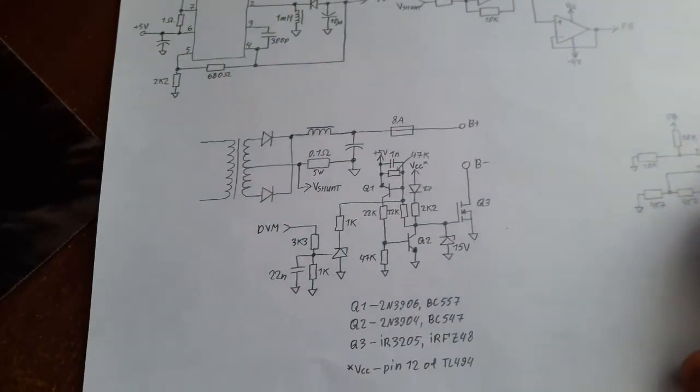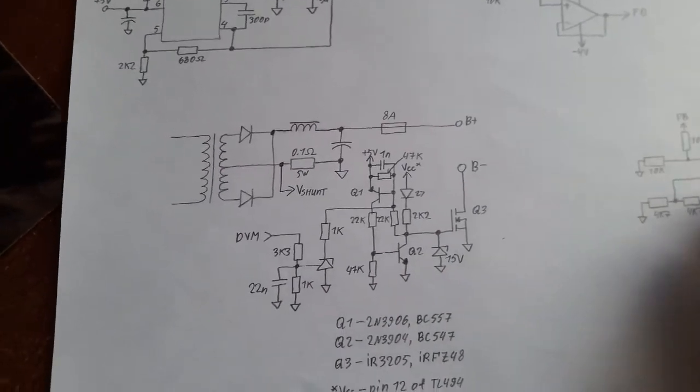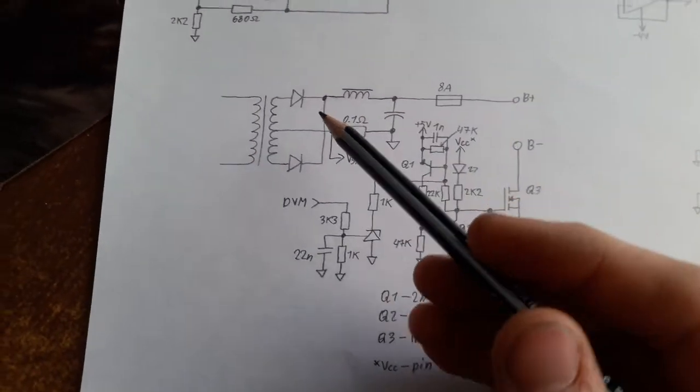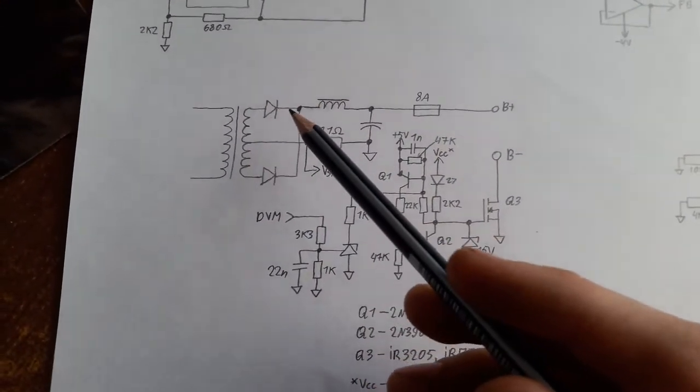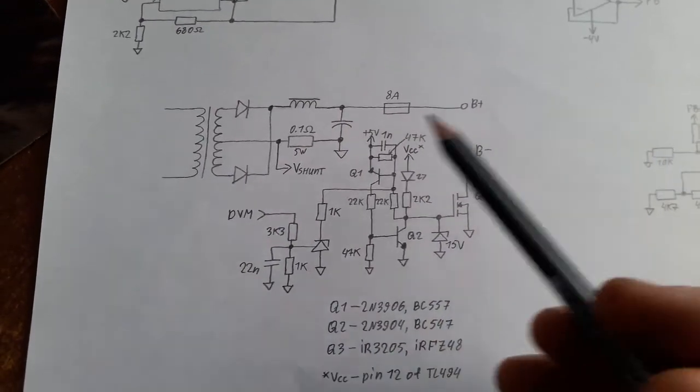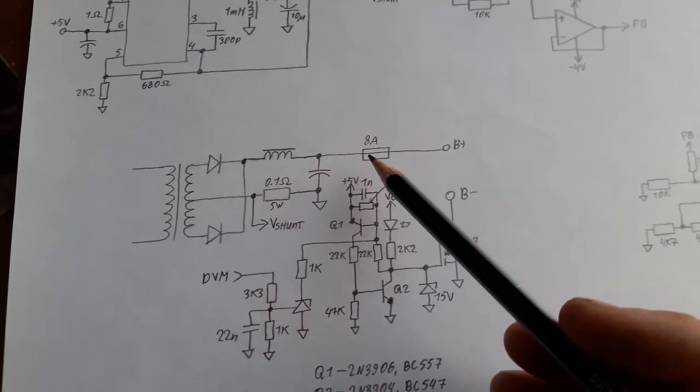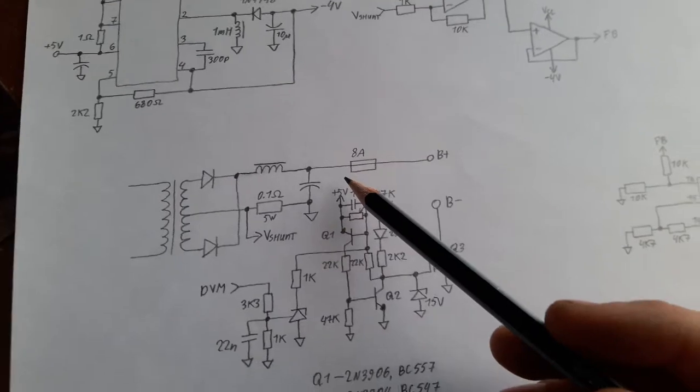Now to the protection. Here you can see again the output stage, you can see your transformer, choke, capacitor, bada bada bada, fuse, 8 amp fuse, not really necessary but you know better to be safe, it's better to be safe than sorry, right?